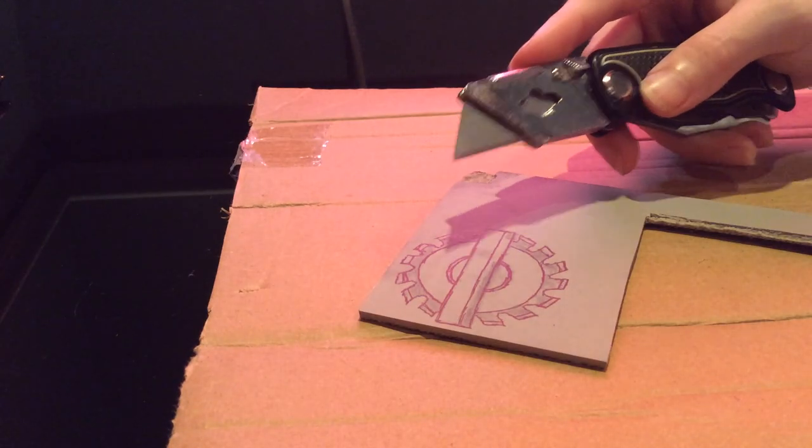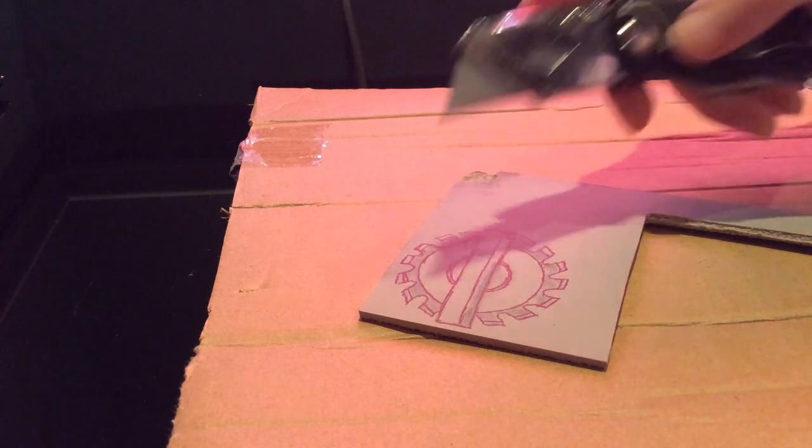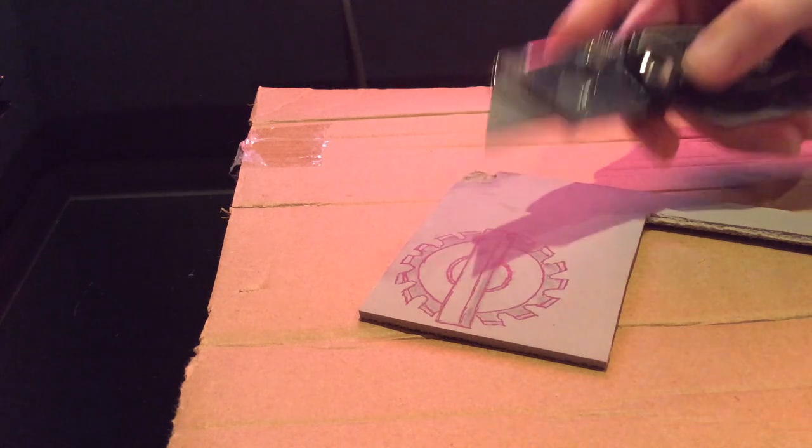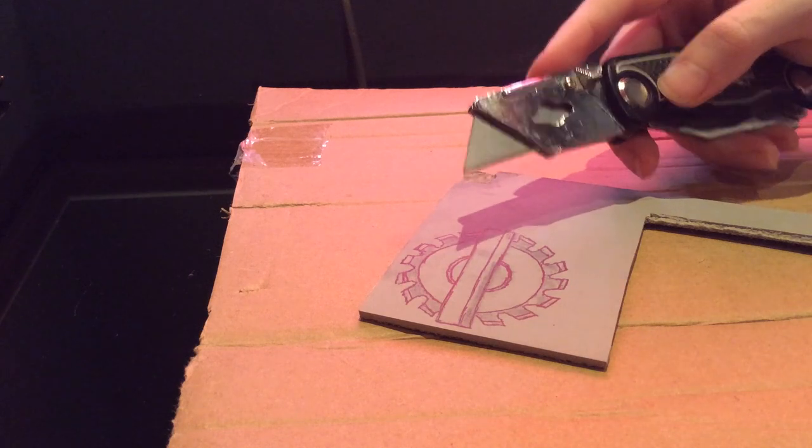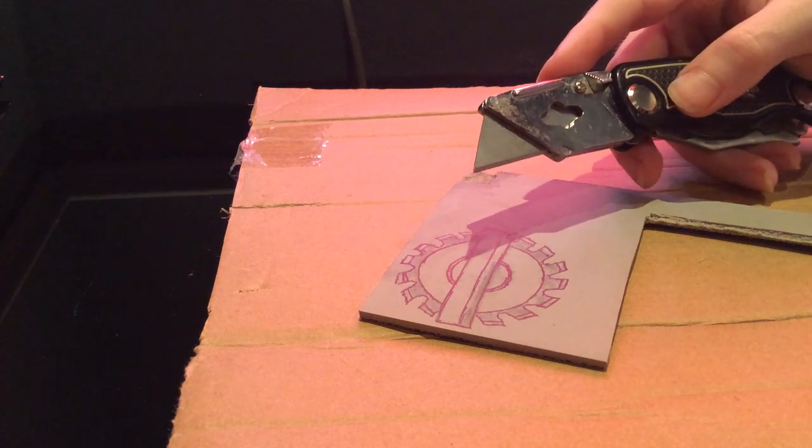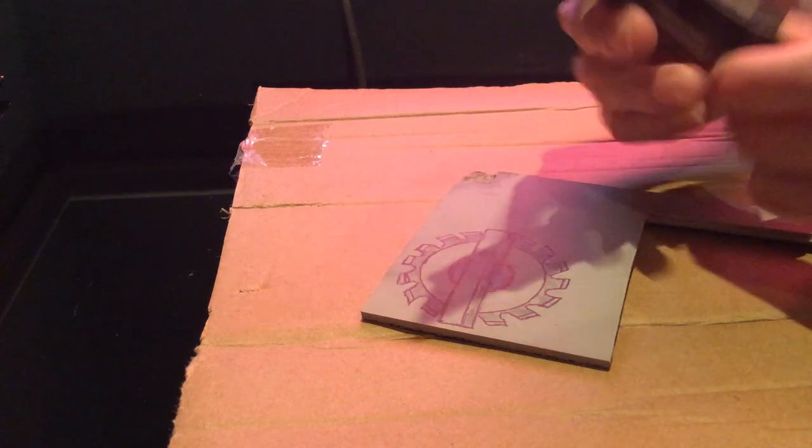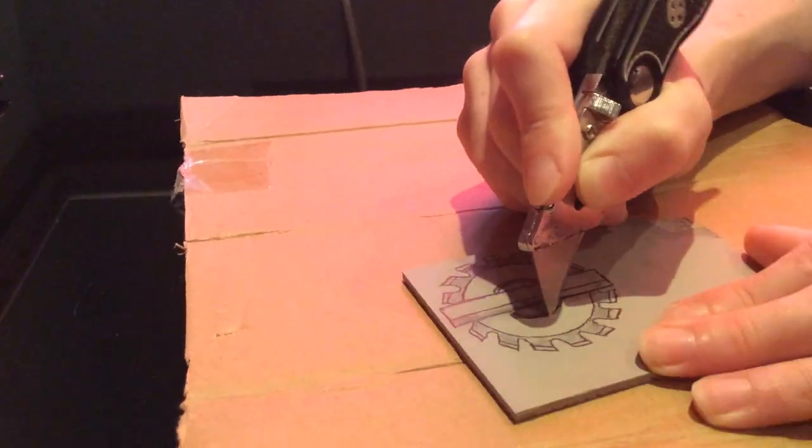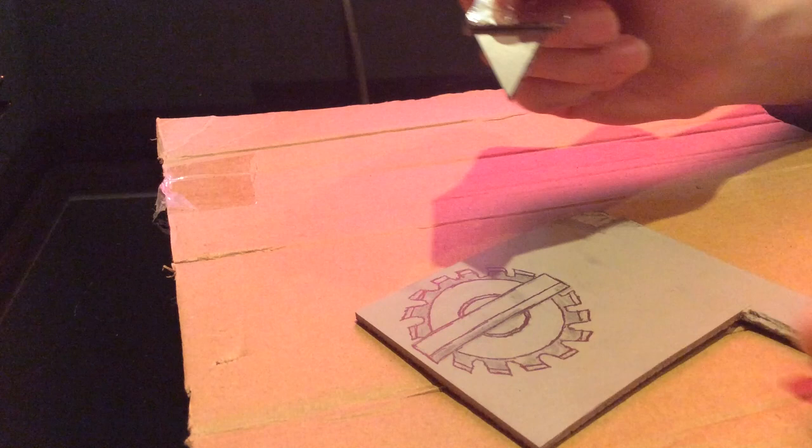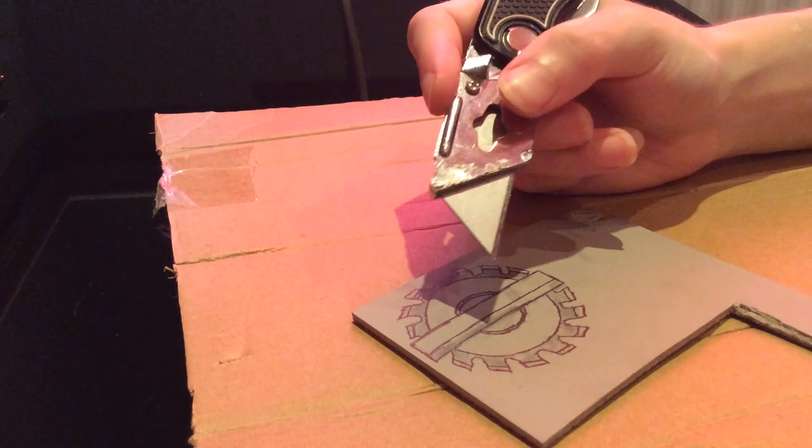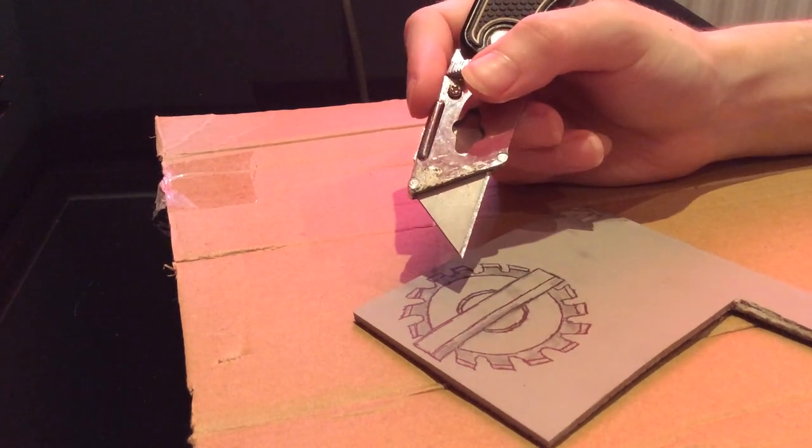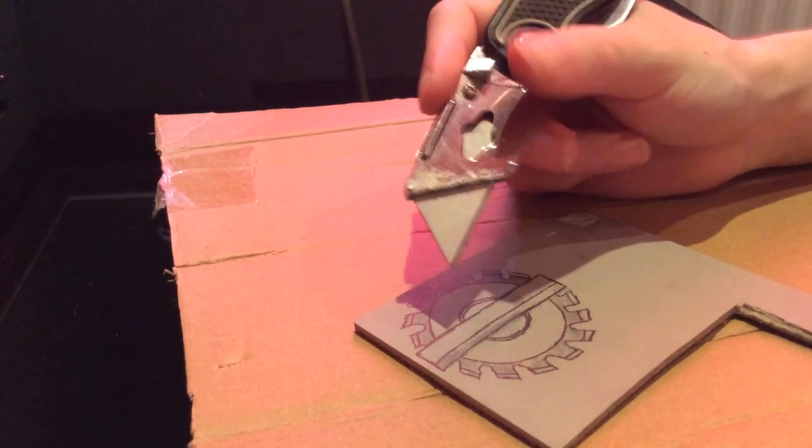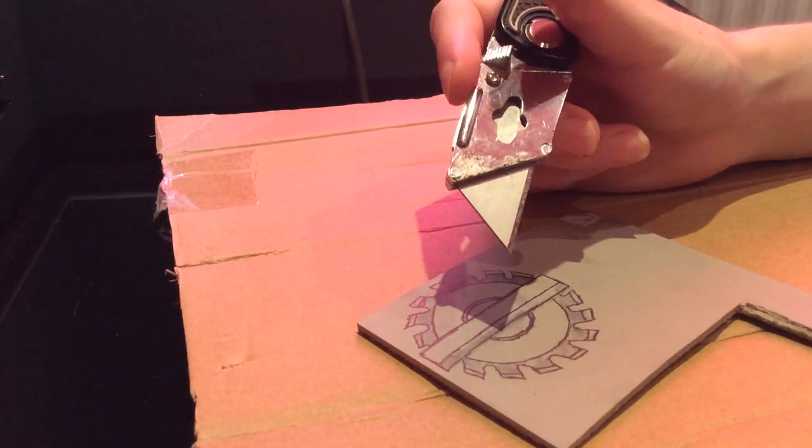I shall now use the sharp knife to score round all the edges and then I'll use the gouge to remove the material. Always remember when using a sharp knife, be careful, keep your fingers out the way of the blade. I shall score round all the edges. I'll come back and show you what it's like removing the material with the gouge.